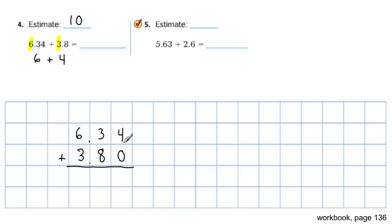4 plus 0 is 4. 3 plus 8, 11. Then 1 plus 6 is 7, plus 3 is 10. And then not forgetting your decimal point. So our answer, 10.14. Is it close to the estimate? Yeah, it's very close to the estimate.